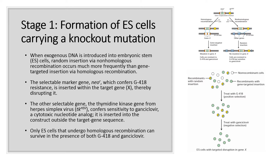In the first stage, a DNA construct containing a disrupted allele of a particular target gene is introduced into embryonic stem cells. These cells, which are derived from the blastocyst, can be grown in culture through many generations. When exogenous DNA is introduced into embryonic stem cells, random insertion via non-homologous recombination occurs much more frequently than gene-targeted insertion via homologous recombination. To select for cells in which homologous gene-targeted insertion occurs, the recombinant DNA construct introduced into embryonic stem cells needs to include two selectable marker genes.